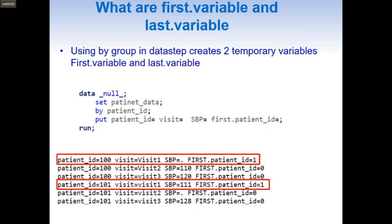Now let us look into the next concept we need to know to solve this problem — the concept of first-dot variable and last-dot variable. I have made a video on this topic in much more detail, and the link will be in the description below. Using a BY group in the data step creates two temporary variables: first-dot variable and last-dot variable.